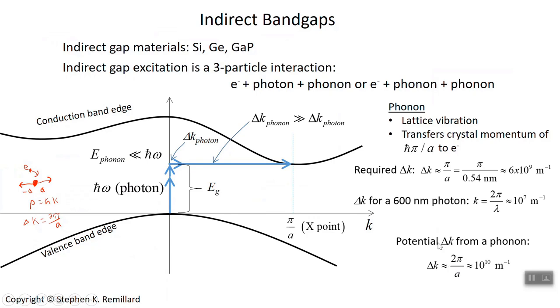So that's how indirect bandgaps do their business. How they can take an electron in the valence band and move it up into the conduction band, despite the fact that the conduction band has its minimum at a significantly different place in momentum space. They rely on lattice vibrations to deliver the impulse to redirect those electrons. Basically, the electron's momentum needs to change direction in order to get up to this point in the conduction band.